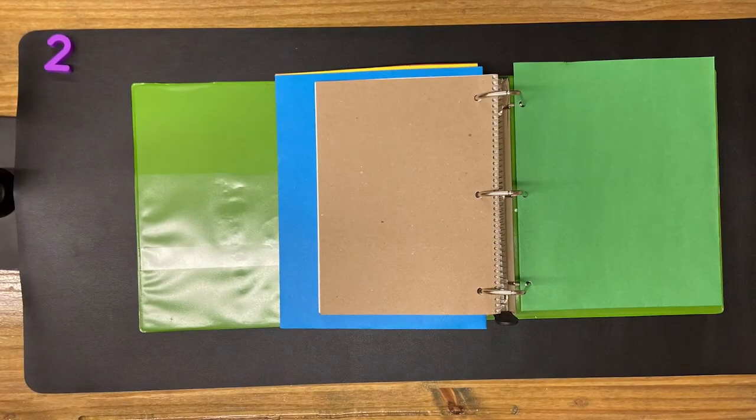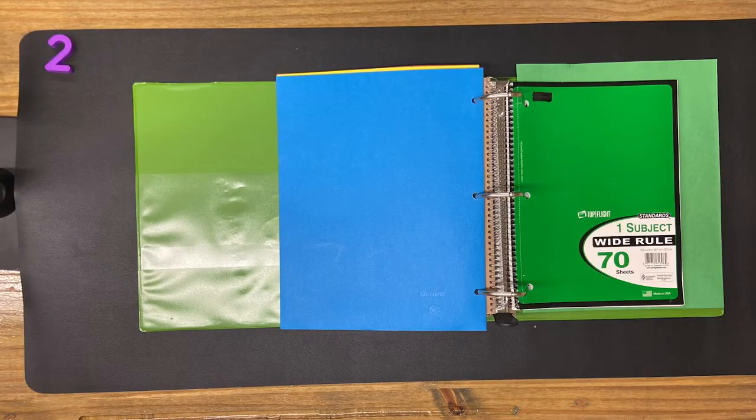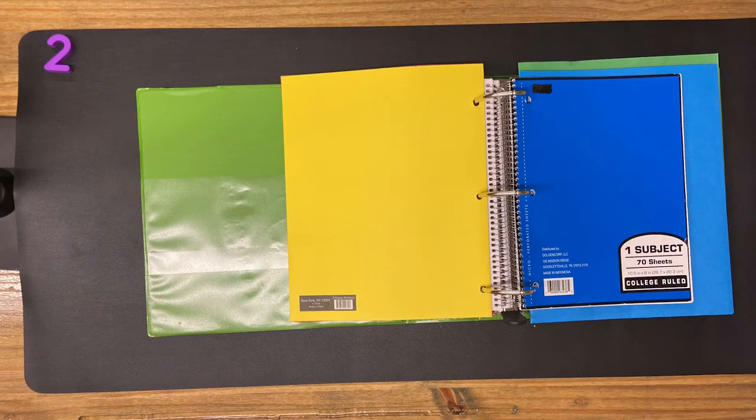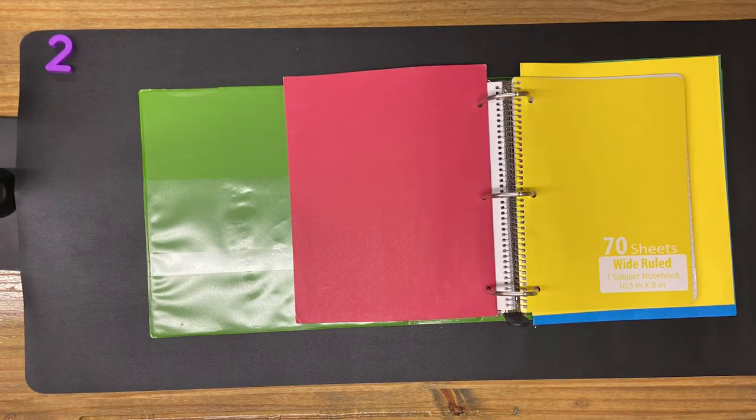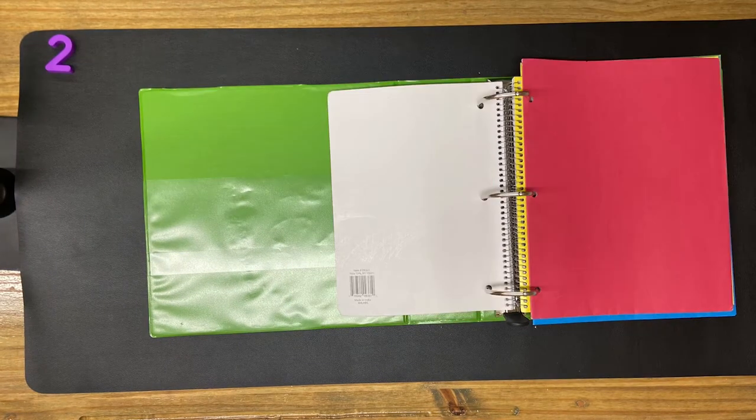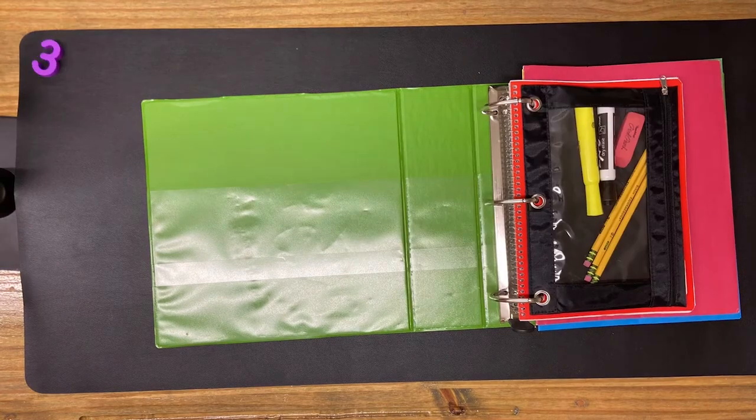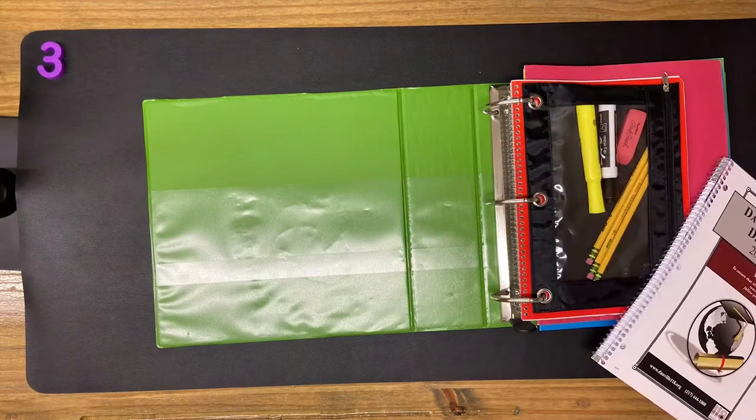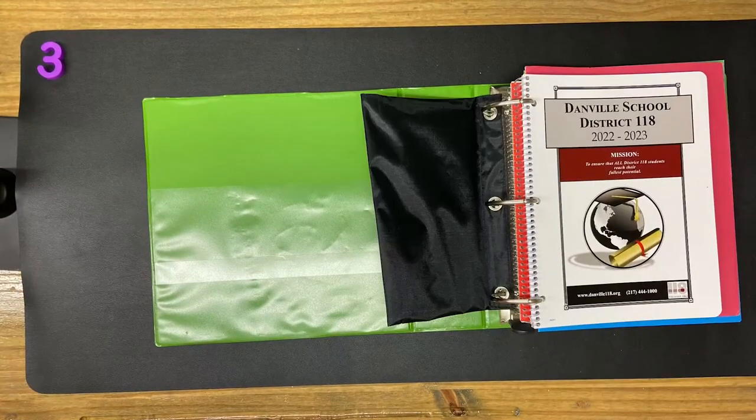The order of your notebooks and folders should match your schedule. So if you have math first, that should be the first one. If you have ELA first, that would be the first one. Make sure you have all four colors in the correct order, then add your agenda to the front.